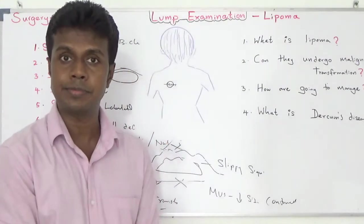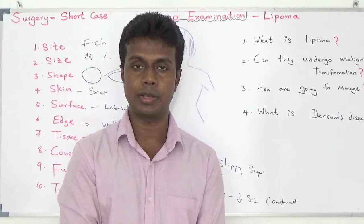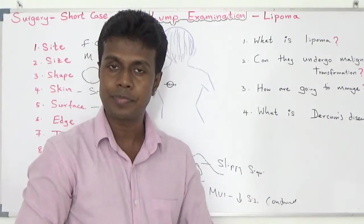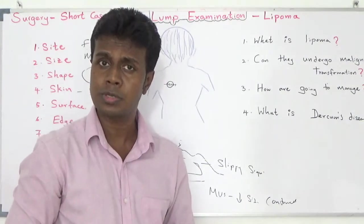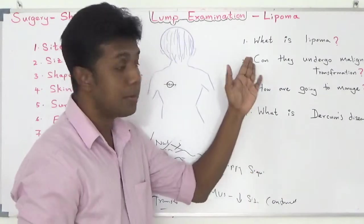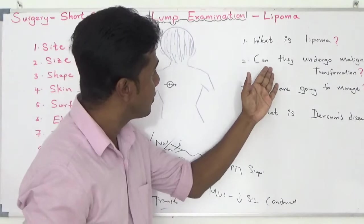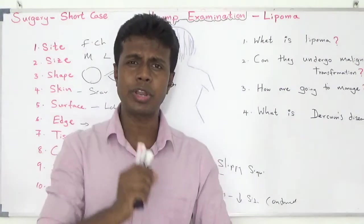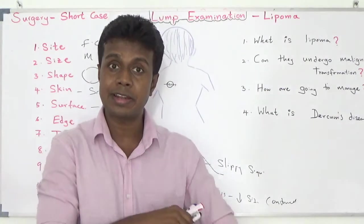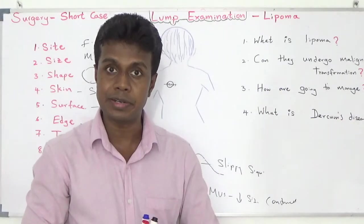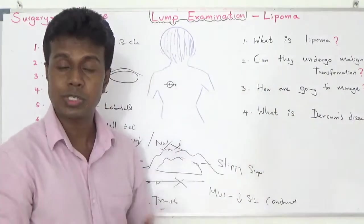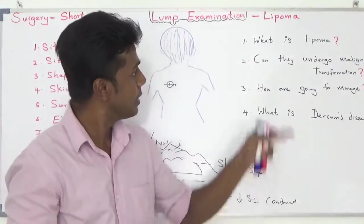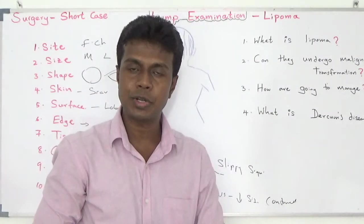At the end of your presentation, the examiner will ask: what is a lipoma? You should say: lipoma is a benign mature fat cell collection. The examiner may then ask: can lipoma undergo malignant transformation? This is the most worrying factor for the patient — can the lump become malignant?